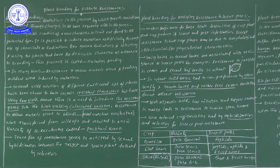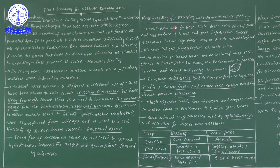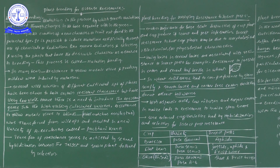Next new concept: plant breeding for developing resistance to insect pests. This explanation is important for the NEET examination. Another major cause for large-scale destruction of crop plants and crop produce is insect and pest infestation.